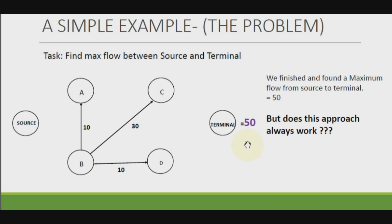We got lucky in this case. We know the maximum flow for this graph is 50 because the source is not pushing out any more flow. But the question is: does this always work? Let's pick a different initial augmenting path and see if we face any problems.